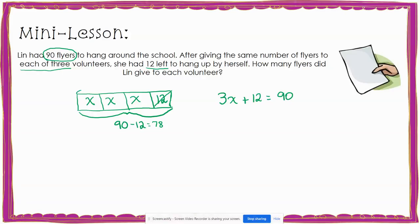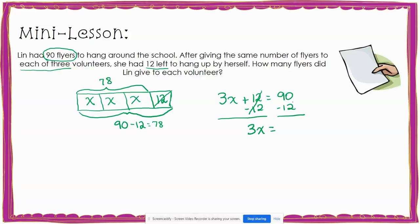That means these three x's together are going to equal 78. I can show this on my equation by subtracting 12 from both sides. On the left side, the additive inverse of 12 and negative 12 cancel, leaving me with 3x equals. And on the right side, 90 minus 12 is 78.